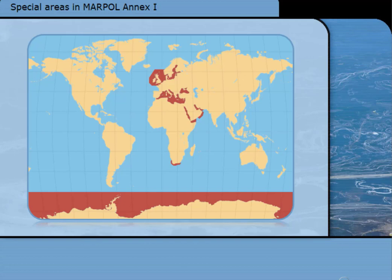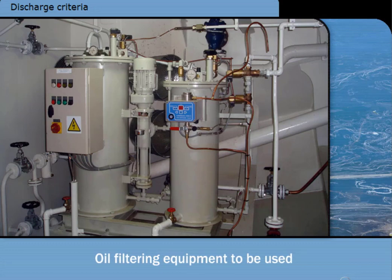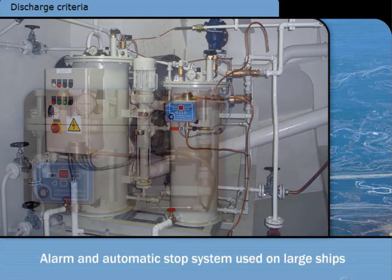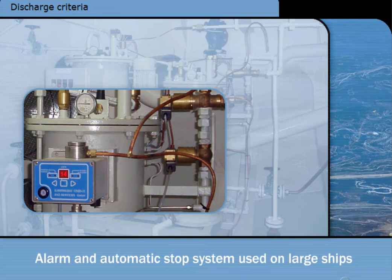An area is declared a special area where, for reasons of its nature and its sea traffic, special protection is required. The special areas are listed in the current edition of MARPOL. Discharges of oily bilge water are not allowed unless oil filtering equipment is used. This is commonly known as a bilge separator or oily water separator. On large ships, an oil content meter, alarm and automatic stop system must be used at all times.